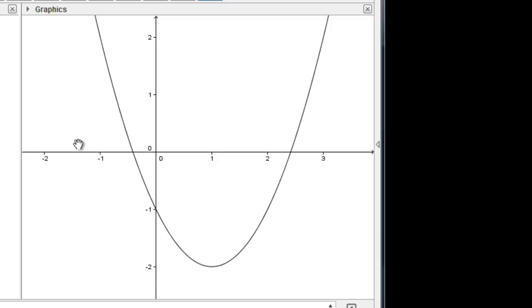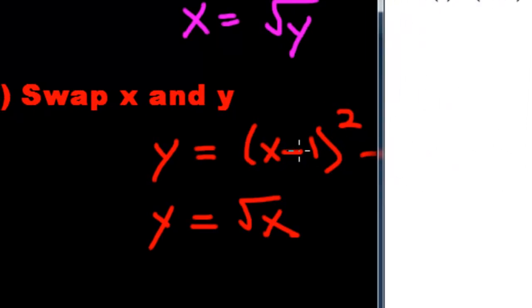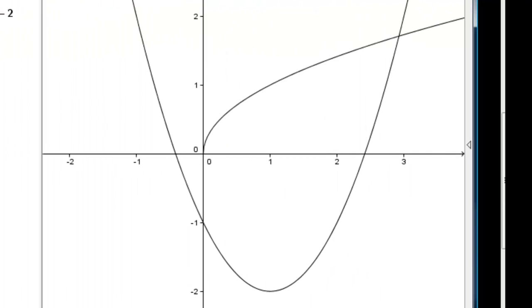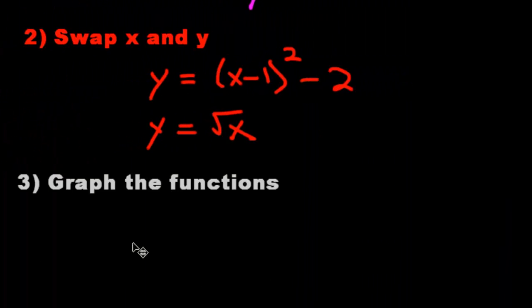Now you can either do this by hand or you can use a graphing calculator. This one right here is x minus 1 squared minus 2. So that would be this function right here. And then we'll graph the second one. And there's y equals the square root of x. I'm going to go ahead and label them. Okay, so now that the graphs are sketched, which actually was step 3, so let me go put that in now. And now that we graphed them, we're going to move on to step 4. Step 4 is to flip over the y-axis. So let's go ahead and take our graph and do that now.